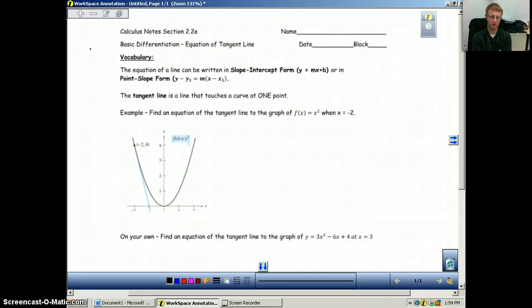Remember, from the last section or the last part, we had talked about that the derivative is the slope of the tangent line. Even though you get an equation in your derivative, that doesn't mean that that's the equation of the tangent line. That's just a slope.